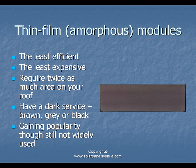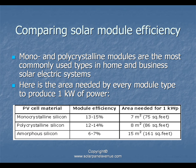Thin film modules are the least expensive but have the lowest efficiency — about half that of monocrystalline modules. This means you need twice as many thin film modules to generate the same amount of power. Thin film modules have a dark surface, usually brown, gray, or black. A comparison table shows the area needed per module type to produce one kilowatt of power: monocrystalline requires the smallest area, while thin film requires the largest.